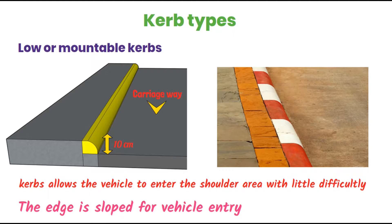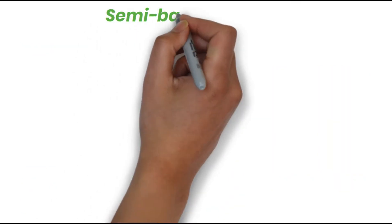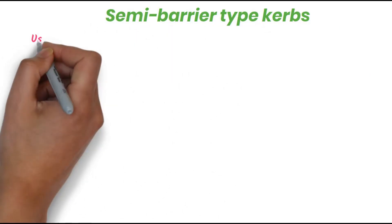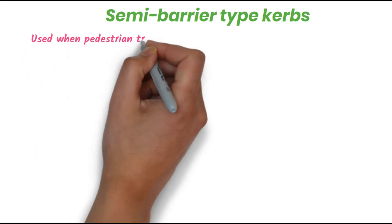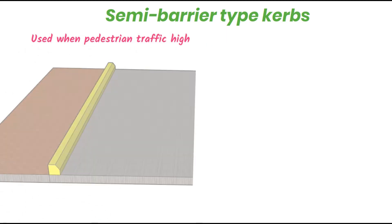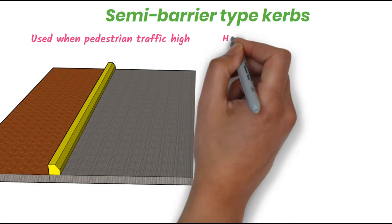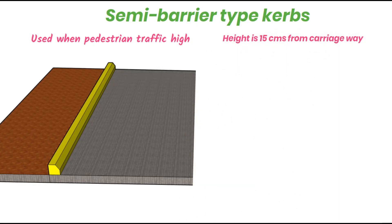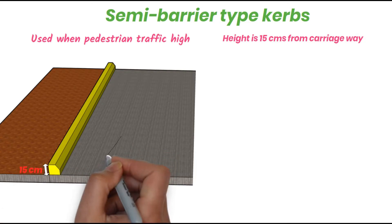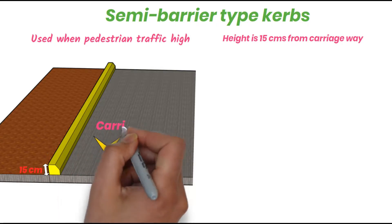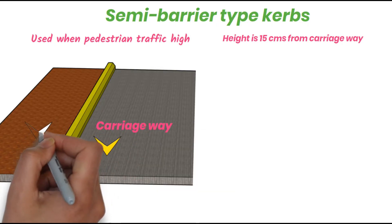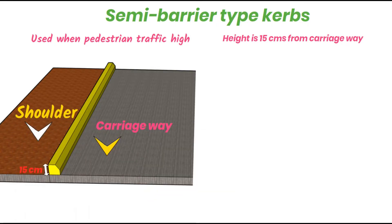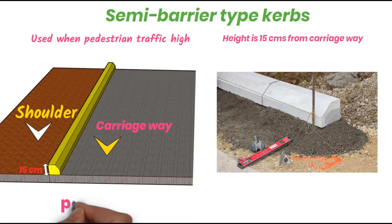Next is semi-barrier type curbs. They are used when pedestrian traffic is very high and pedestrians use the shoulder area. The height is around 15 cm from the carriageway. This almost prevents entry of vehicles from the carriageway onto the shoulder.